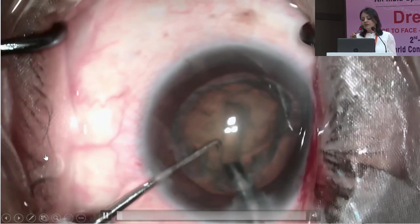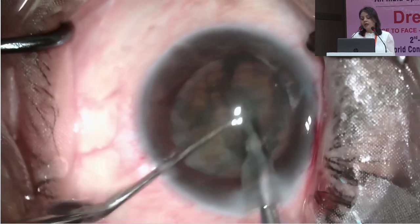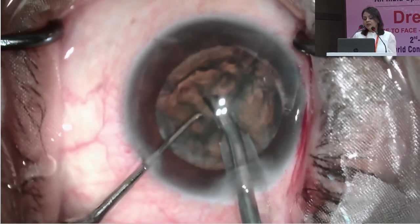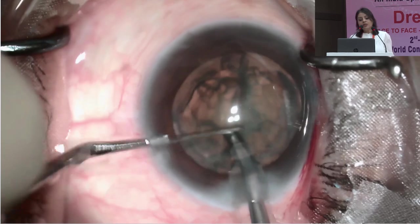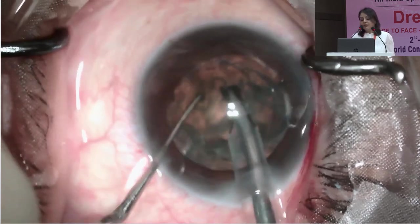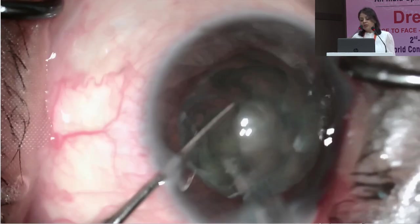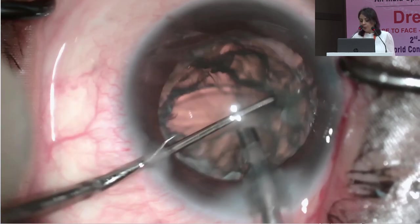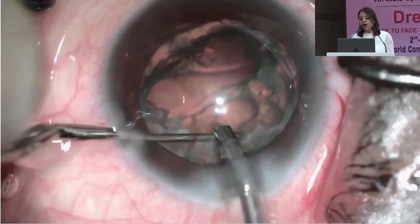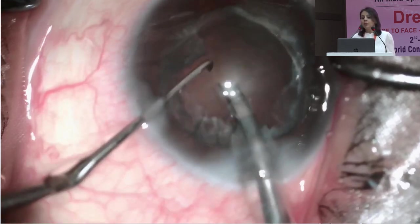One difficulty in soft cataracts: because the nucleus is soft, there is a tendency toward bowl formation when you try to hold the lens and it gives way. When this happens, decrease energy to as low as 2 to 5 percent and increase vacuum — to about 450 mmHg — then hold slightly more anteriorly and grab a pole gently. With very low power and increased vacuum, if you can get one hemi-nucleus up, the rest becomes easy. This highlights how to manage bowl formation in soft cataracts.